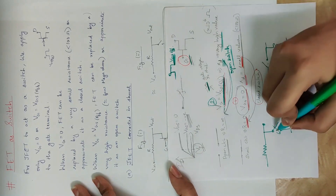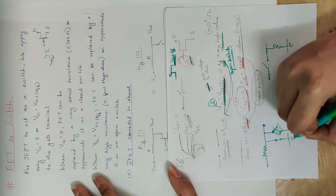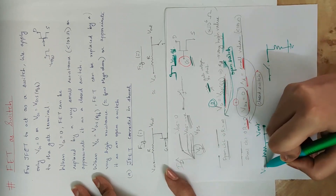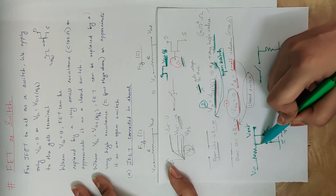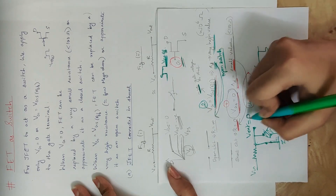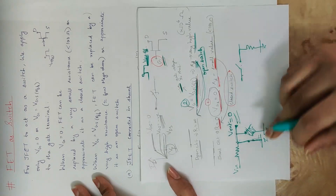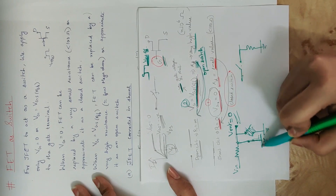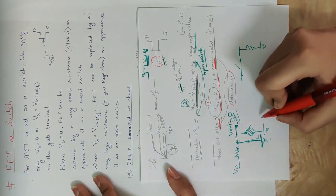The Vout terminal is directly grounded, so Vout equals 0.